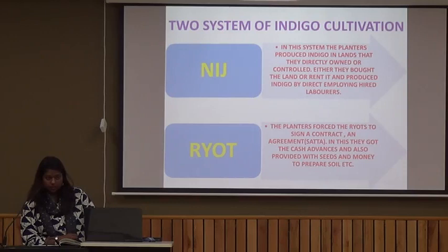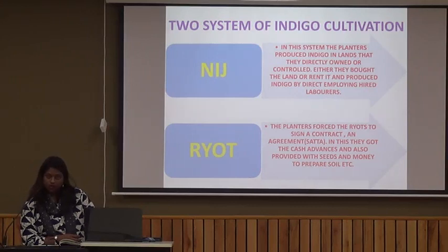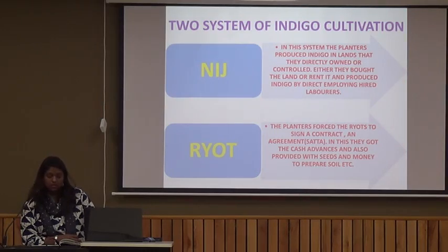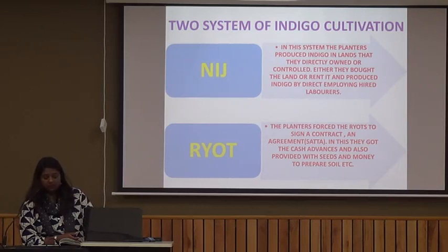There were two systems of Indigo cultivation. First, Nij — meaning own — and the other was Ryot. In Nij cultivation, the planters produced Indigo on land they directly owned or controlled, either bought or rented, employing hired laborers. In the Ryot system, the planters forced the Ryots to sign a contract. These planters could be British, Scotsmen, or Indians given contracts by the British to grow Indigo. The planters forced the headmen to sign a contract or agreement known as Satta, through which the Ryots received cash advances and were provided with seeds and money to prepare the soil.